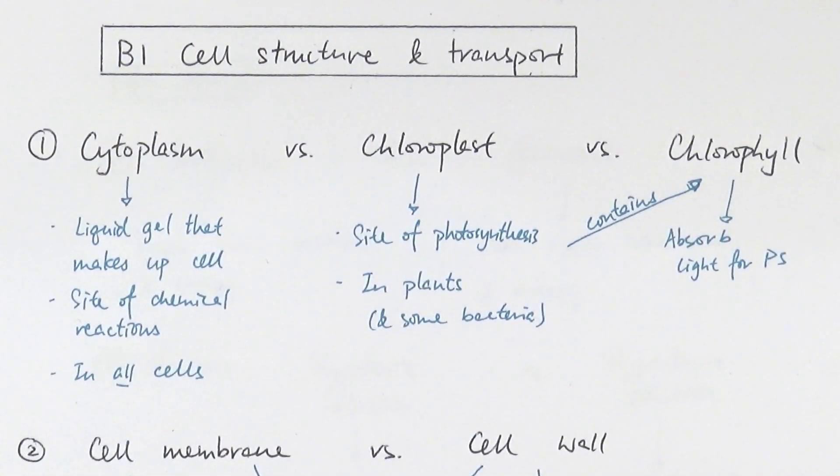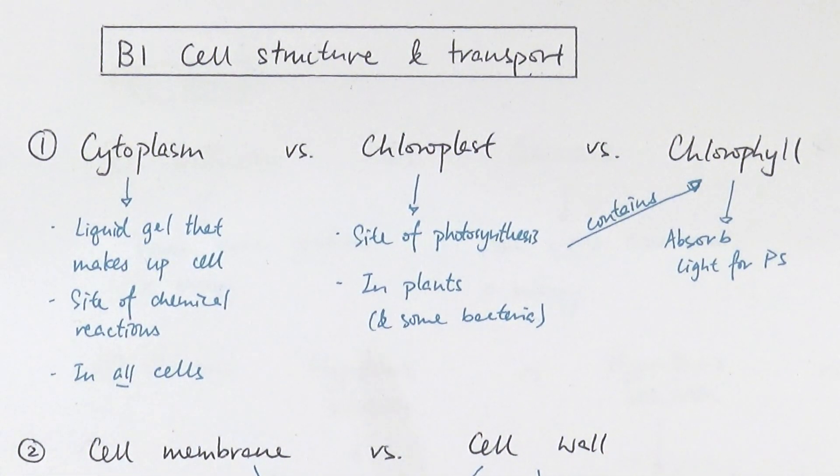One of the most common things that I can see when marking students' tests or mocks in the GCSE biology spec is that they mix up cytoplasm, chloroplast and chlorophyll. Part of this is have you actually revised properly or learned the content well enough. So cytoplasm is the liquid gel that makes up the cell.